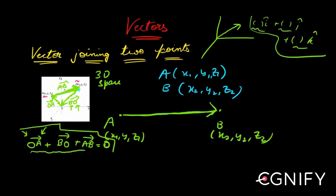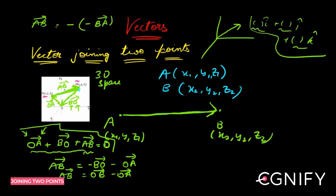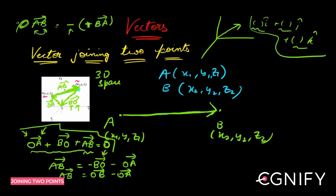That means AB bar equals negative BO bar minus OA bar. Now, negative BO bar can be written as OB bar. So AB bar equals OB bar minus OA bar. Note: if you reverse the order of the two alphabets in a vector, you must account for a negative sign. So that is the final result: AB bar = OB bar minus OA bar.